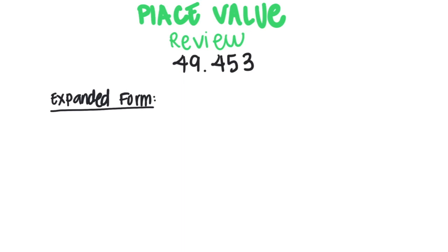We start with the place value of 4, which would be 4 times 10 because it's in our tens place value. Then I add that, and then I do our 9, which is our ones place value, so I write 9 times 1. Then we hit our decimal, and when we multiply by powers of 10, it's only a fraction because we only have a fraction of a whole.